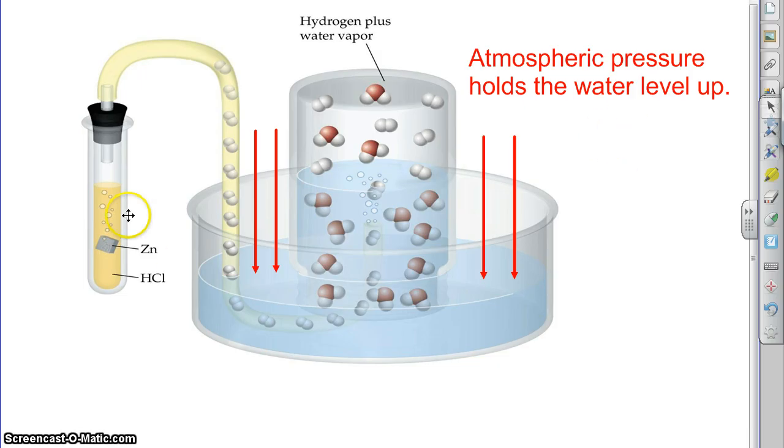So you might just say well whatever the pressure of this hydrogen gas that I bubbled in here is just atmospheric pressure, easy enough. But we have a problem. If you see the label here, this says hydrogen plus water vapor.